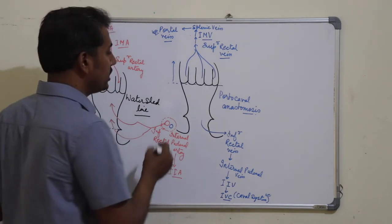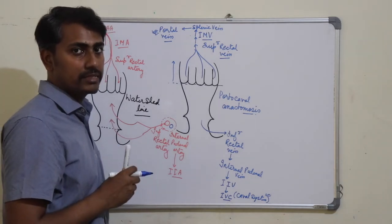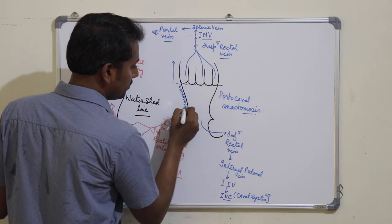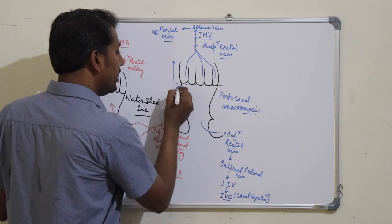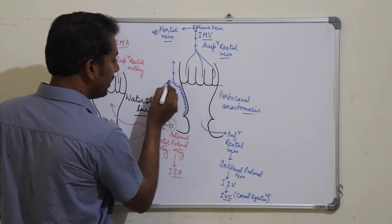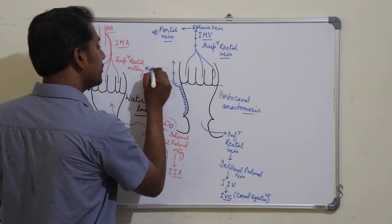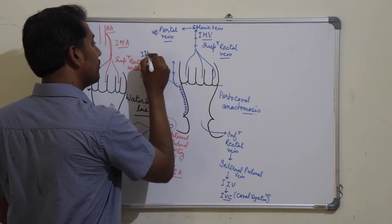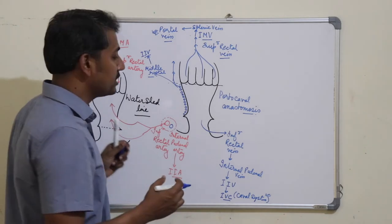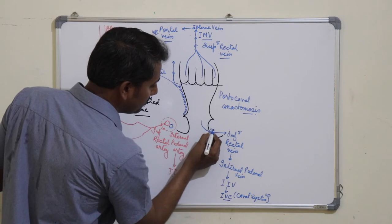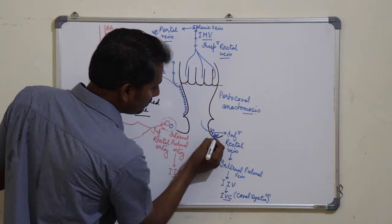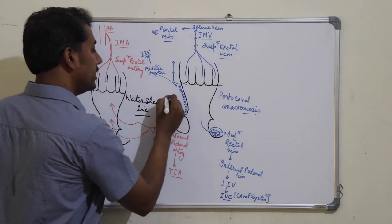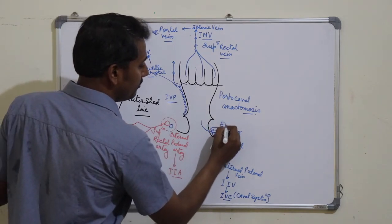There are two venous plexuses associated with this anal canal: the internal venous plexus and the external venous plexus. The internal venous plexus is present in the submucosa above the white line of Hilton, draining into the superior rectal vein and also the middle rectal vein, which drains into the internal iliac vein. The external venous plexus is located around the lower part of the anal canal just deep to the perianal skin, and drains into the inferior rectal vein.